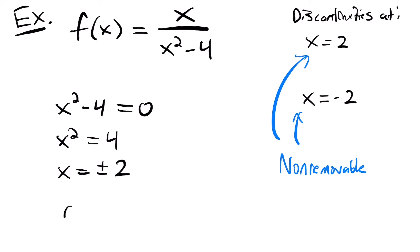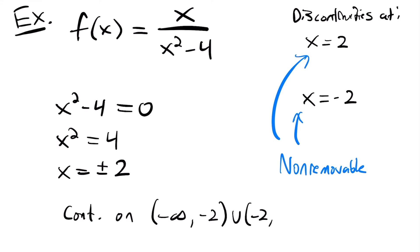To summarize: for the function x / (x² − 4), we have two discontinuities at x = 2 and x = −2, and they're both non-removable. So the function is continuous on the interval (−∞, −2) ∪ (−2, 2) ∪ (2, ∞). It's only discontinuous at −2 and 2.